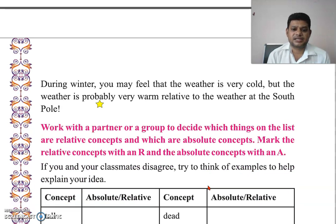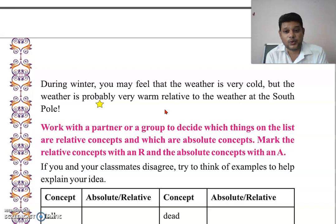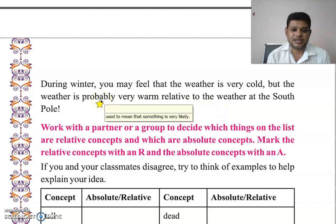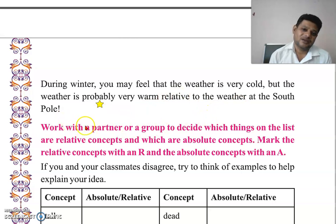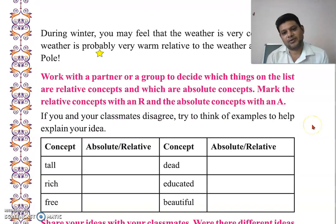During winter, you may feel that the weather is very cold. But the weather is probably very warm relative to the weather at the South Pole. 'Probably' means that something is very likely. So in winter, the weather may feel cold to you, but compared to the South Pole, it is very warm. So is this an absolute concept or a relative concept? Friends, it is a relative concept.